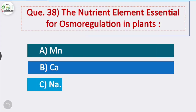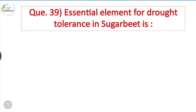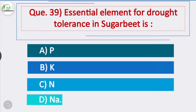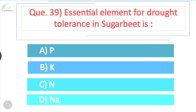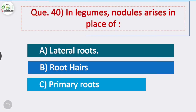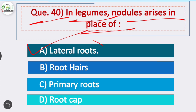Question 38: The nutrient element essential for osmoregulation in plants — sodium is the nutrient element essential for osmoregulation in plants — option C is correct. Question 39: Sodium is also an essential element for rot tolerance in sugar beet; sugar beet is an indicator plant for sodium. Question 40: In legumes, nodules arise in place of — option A is correct — in legumes, nodules arise in place of lateral roots.